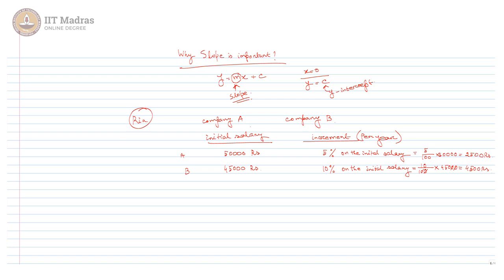Although it is clear from the initial salaries that the initial salary for company A is greater than for company B, let us define variables. Let X denote the number of years, YA denote the salary over the years for company A, and YB denote the salary for company B. The increment for company A is the slope MA, and for company B it is MB.